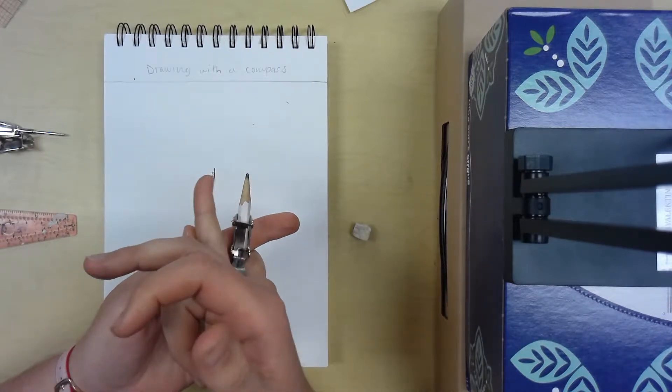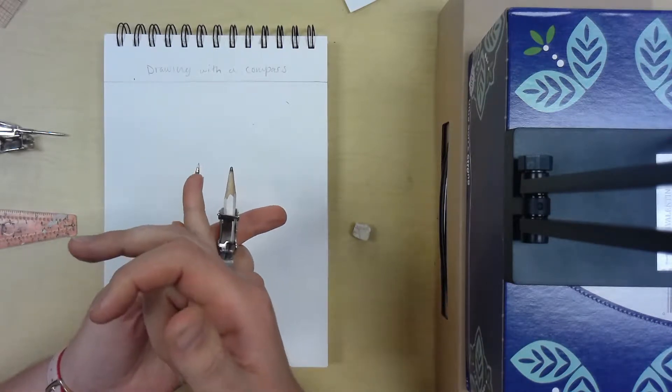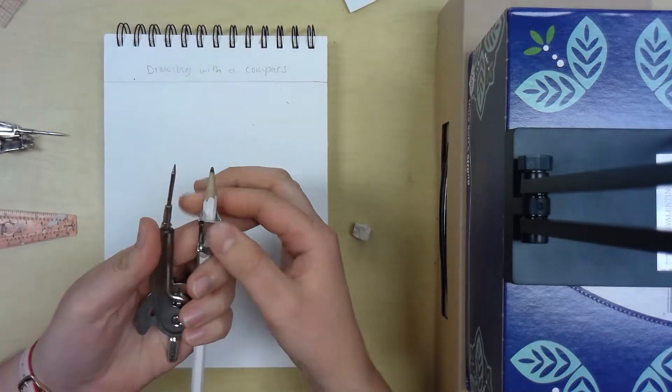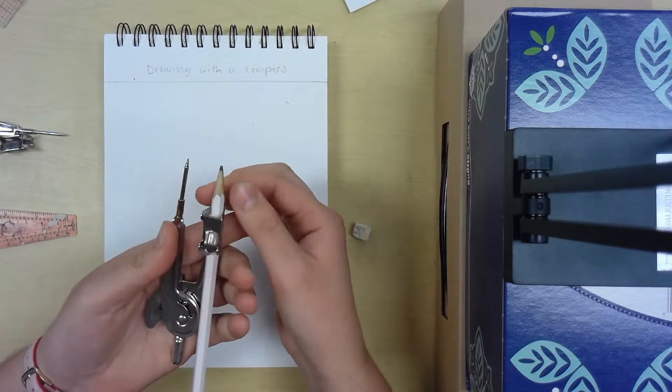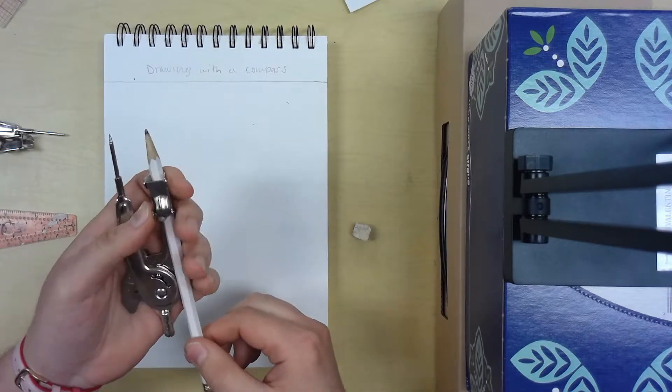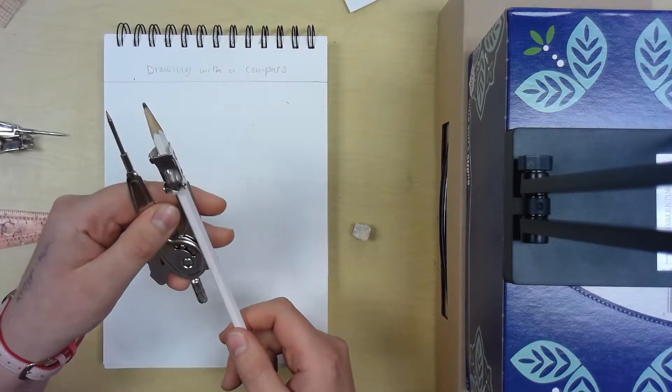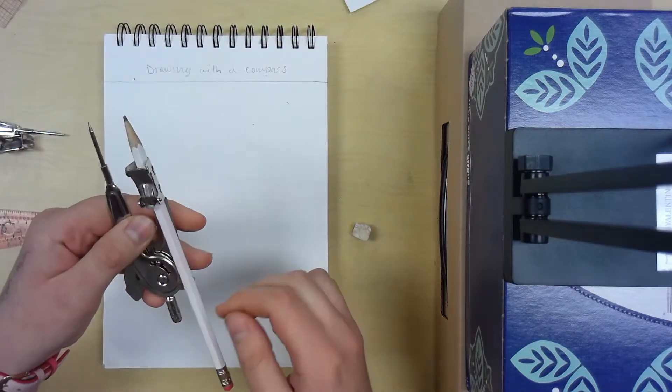When I put my pencil in, you need to have the pencil about the same length as this little metal rod. Then you're going to press this flap down, and this flap just kind of secures your pencil in there. If it wiggles around a little bit, that's not too bad.